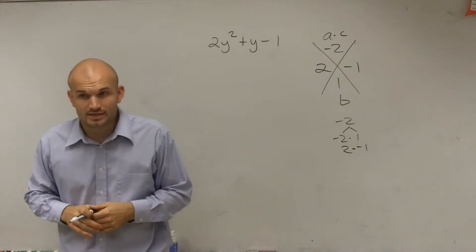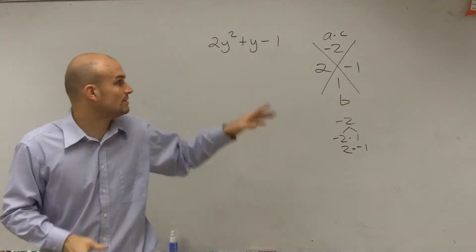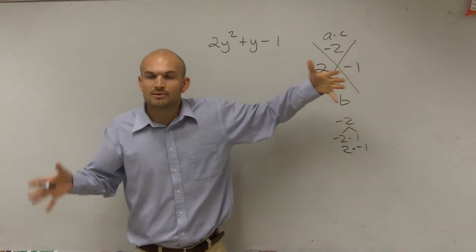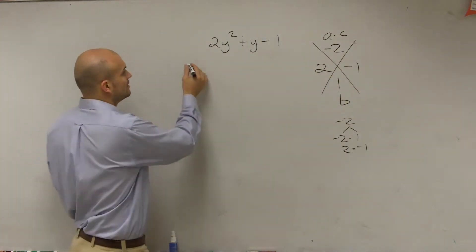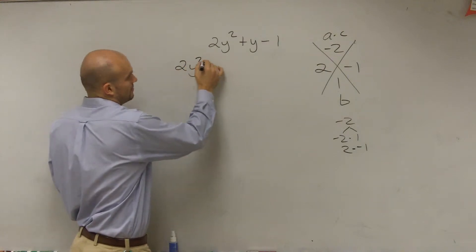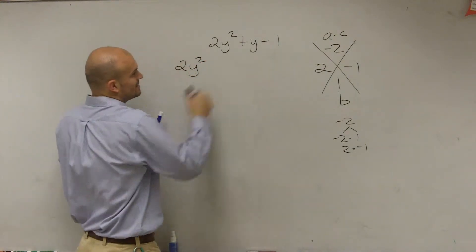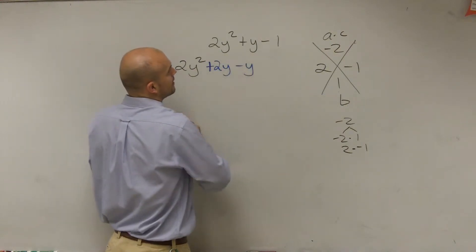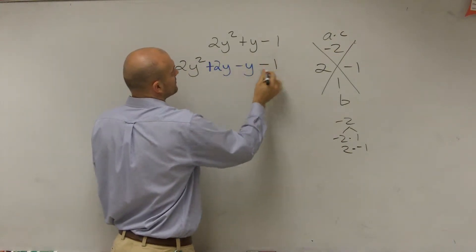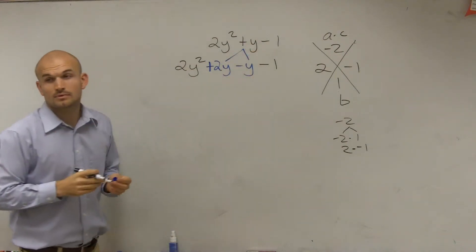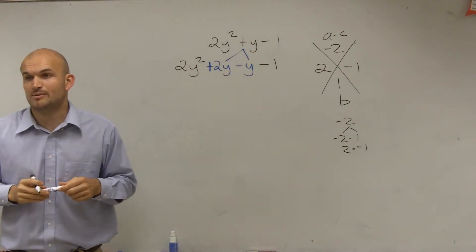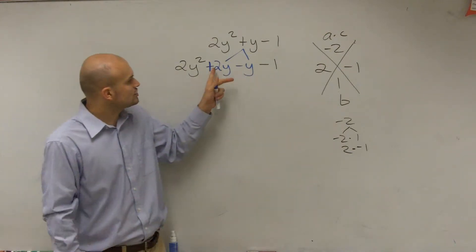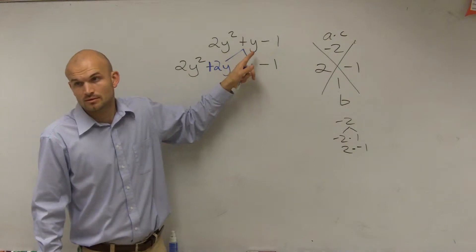Okay, now here's where it gets a little bit confusing, because what we did when a was equal to 1, these were part of our factors, right? But now what we're going to do, I'm going to show you the factoring by grouping method. We're going to take these two terms and we're going to rewrite them as our middle term. Because look, 2y minus y gives us what? Y.